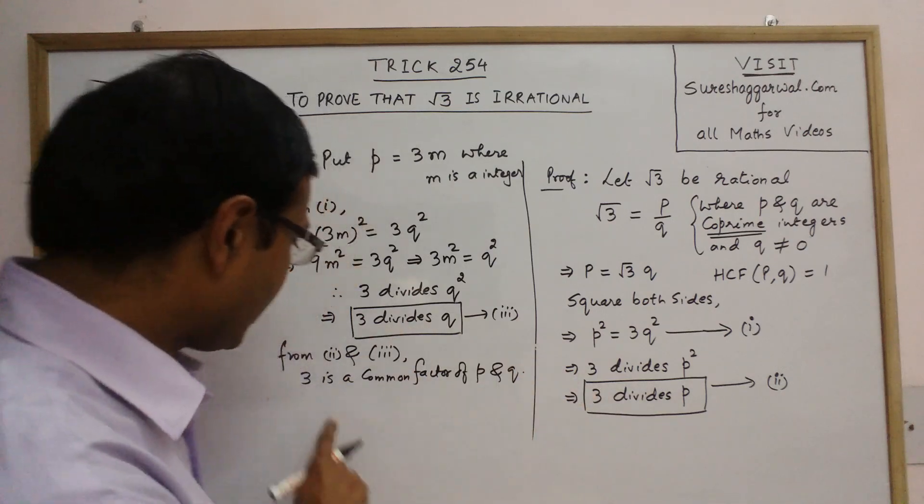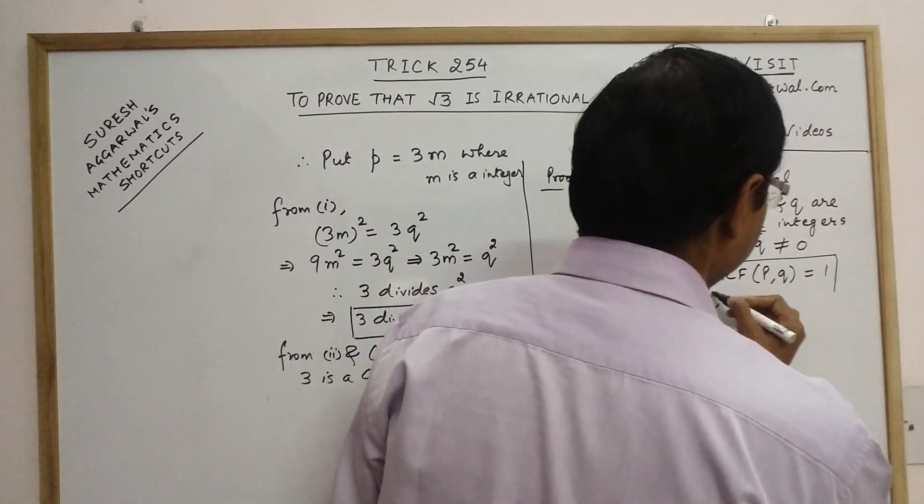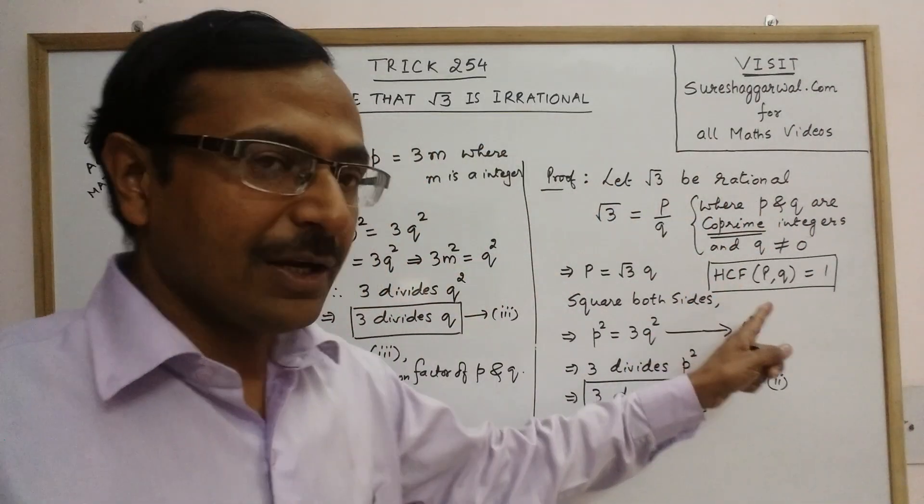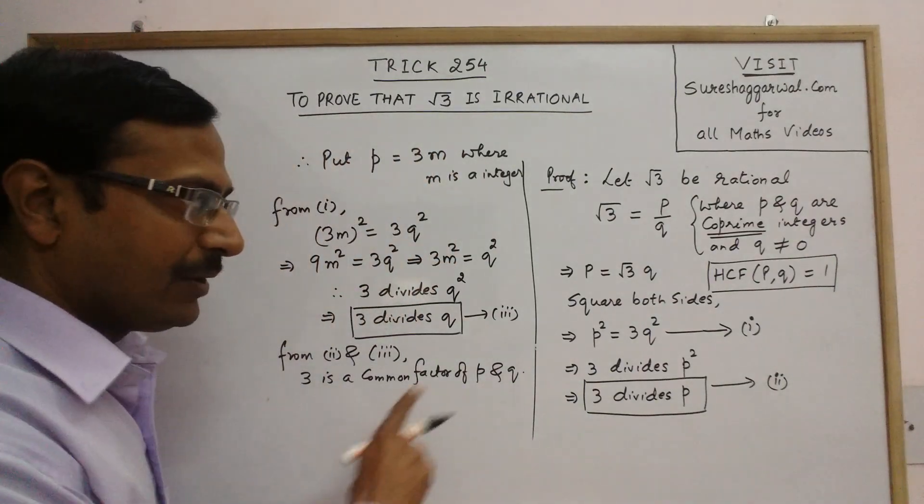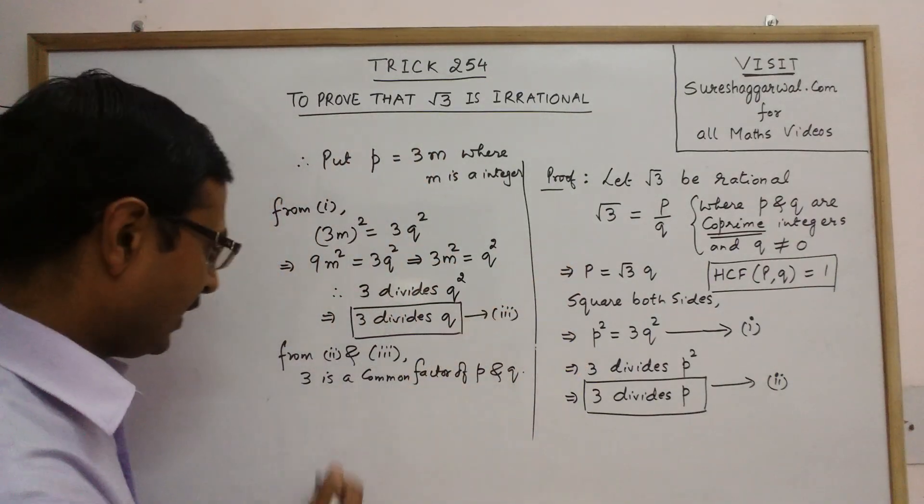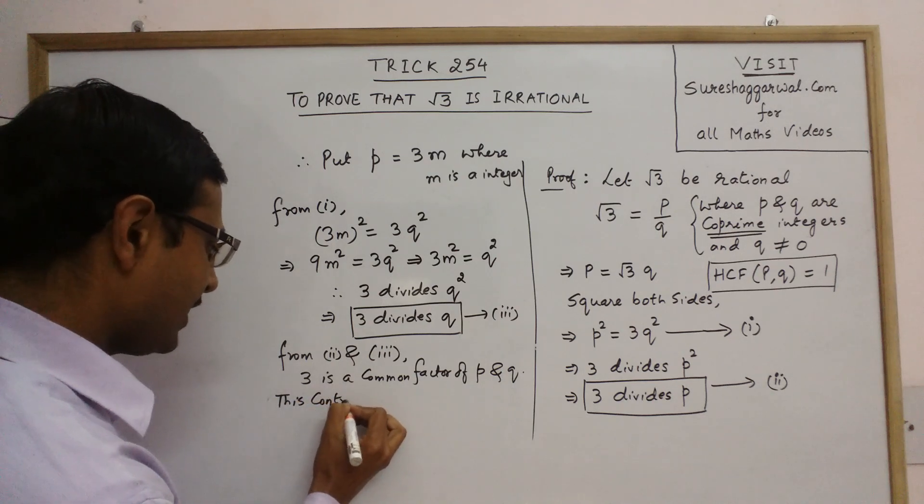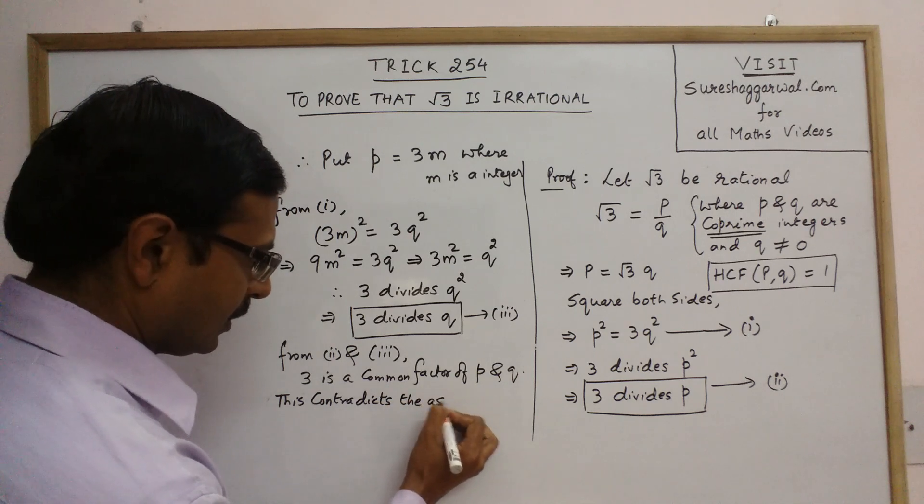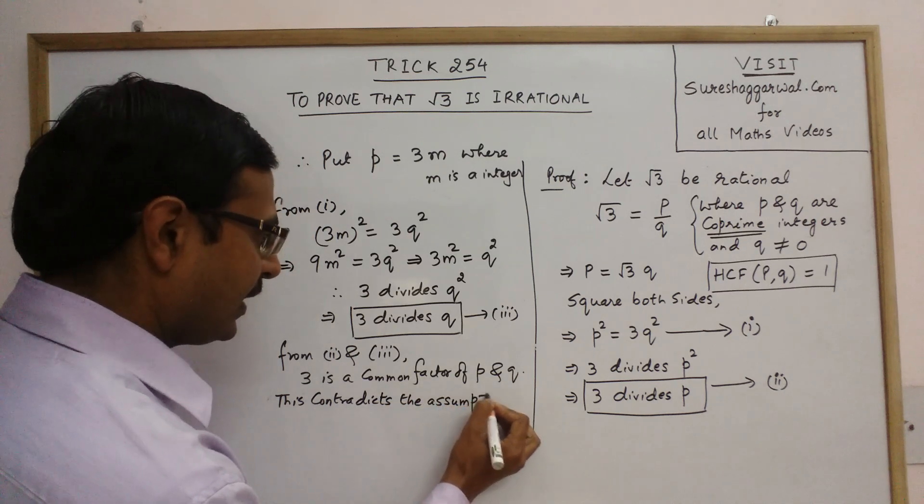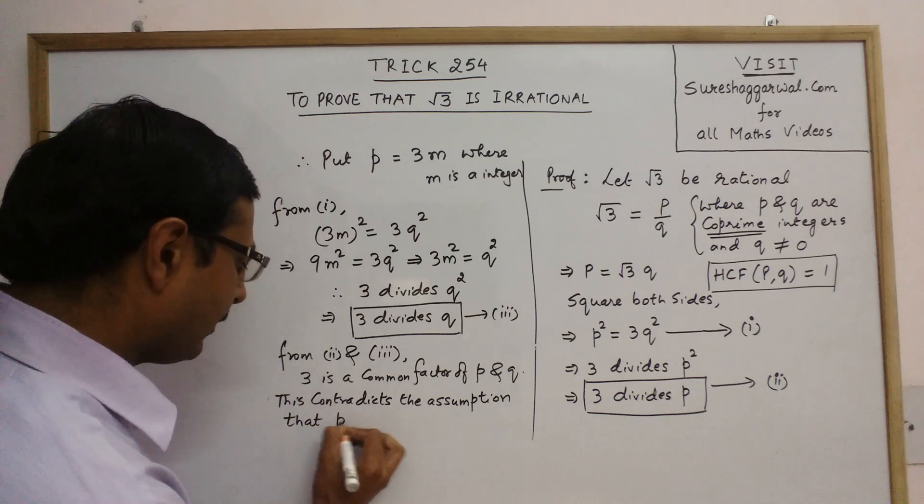So 3 divides both p and q. So 3 is a common factor. But according to our condition, we said that the HCF of p and q is 1. So there is no other common divisor. Now this is a contradiction. This contradicts the assumption that p and q are co-prime.